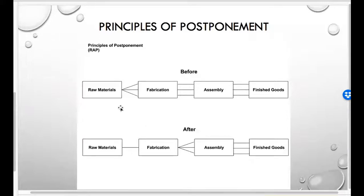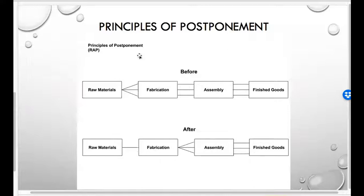Here we have a diagram: raw materials feeding into three product lines — fabrication, assembly, and finished goods. What we do is have one product go into fabrication, then modularize it so that three product lines emerge at assembly and finished goods. This reduces variation from three separate lines down to one.